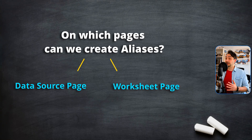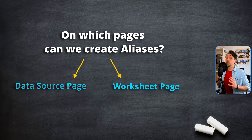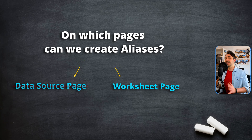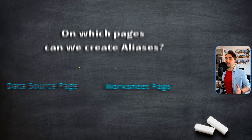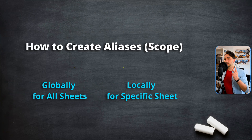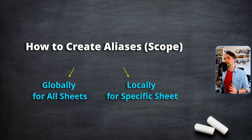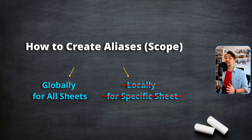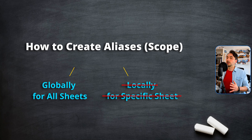Now, on which page can we create aliases? Only on the worksheet page — we cannot create them on the data source page. The second question: can we create aliases globally for the whole workbook, or locally for only one view? The answer is we can create aliases only globally, which affects the whole workbook and all visualizations. We cannot create aliases locally for only one view.